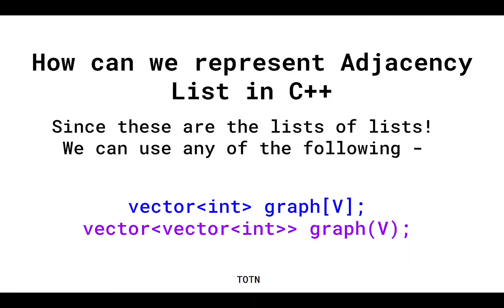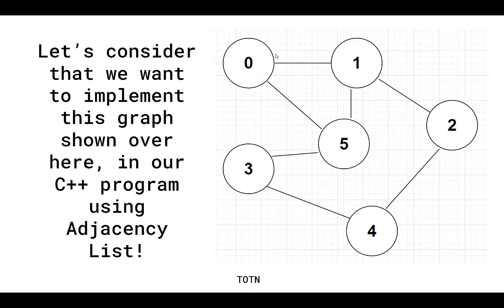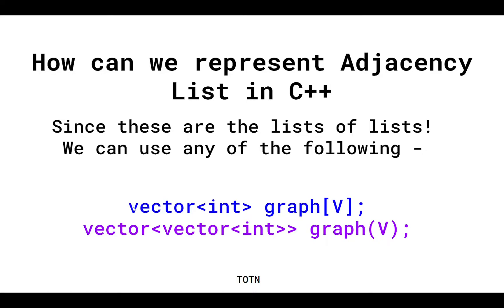How can we represent an adjacency list in C++? Adjacency lists are a list of lists, or array of arrays — each vertex element will contain the list of all its neighbors. The declaration of the graph will be something like: vector<int> graph[v], or vector<vector<int>> graph(v). Both representations behave nearly the same, so you can use either of these two.